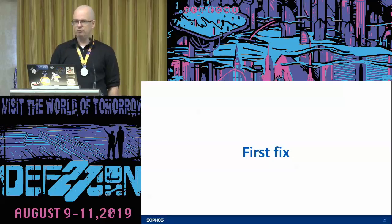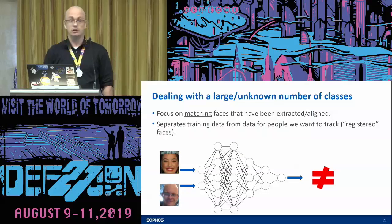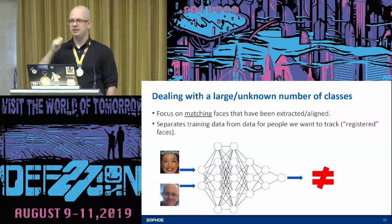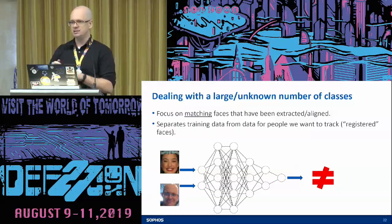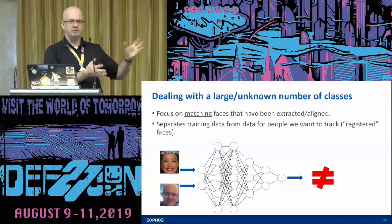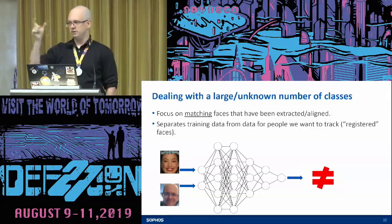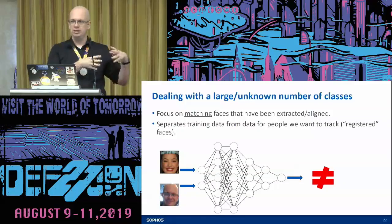So what can we do? The first idea for dealing with a large or unknown number of classes is a matching network. Instead of one face, you feed two faces into it, and the model's only job is to say: are these two faces the same person? This is great because you can feed all the faces you have — 90 combinations of pairs — and say, classify these as the same person, classify these as different people. When you want to detect someone, you run gallery faces against probe faces and ask: same or different? You've essentially separated the training data from the actual recognition step.